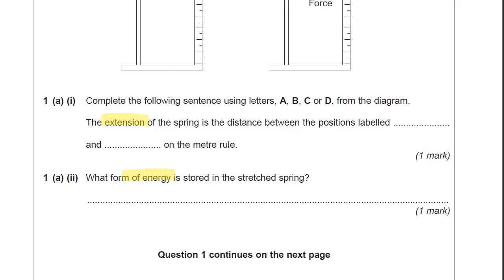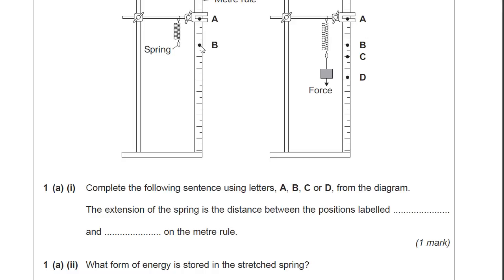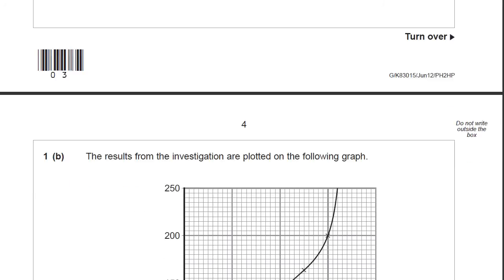I'm going to scroll up again and have a quick look. The extension is between this point here, the original length, B, and that same point on the extended spring. So for this first one, you should have written between point B and C. Now for this next one, you need to get this almost exactly right. You need to say the form of energy in an extended spring is the elastic potential energy. If you'd only written elastic potential, that would be fine, but you must have the word potential in your answer. Hopefully you got those two.